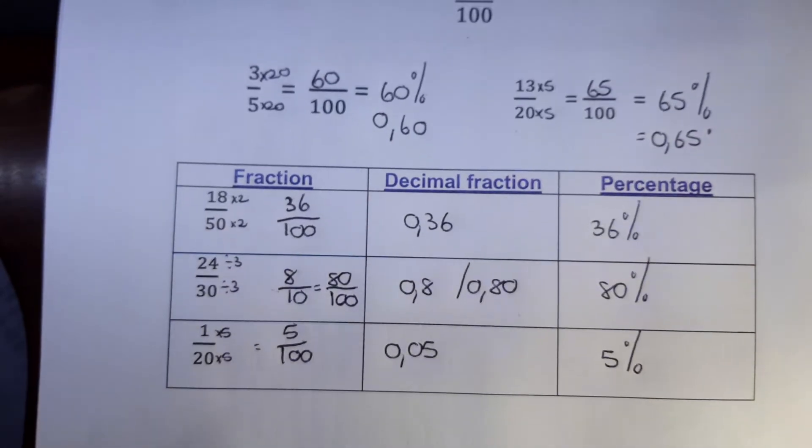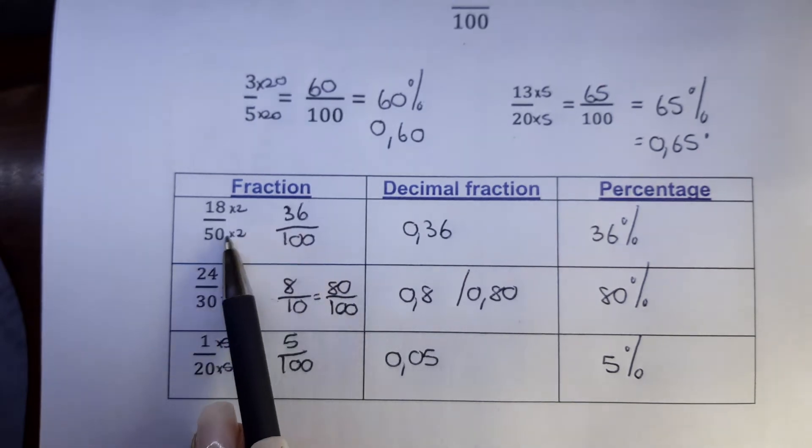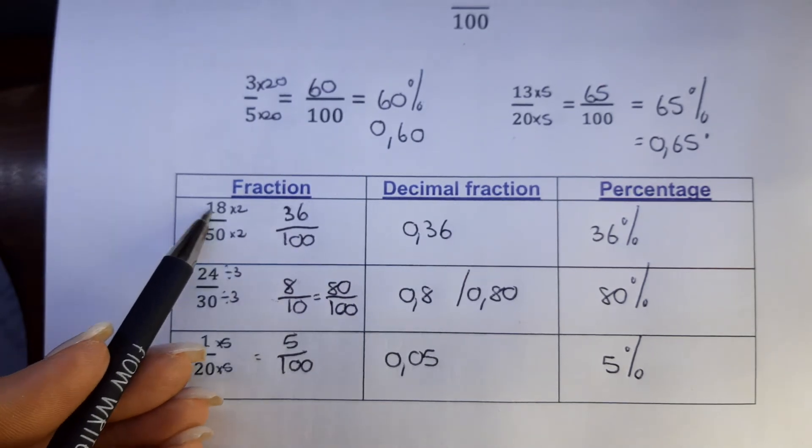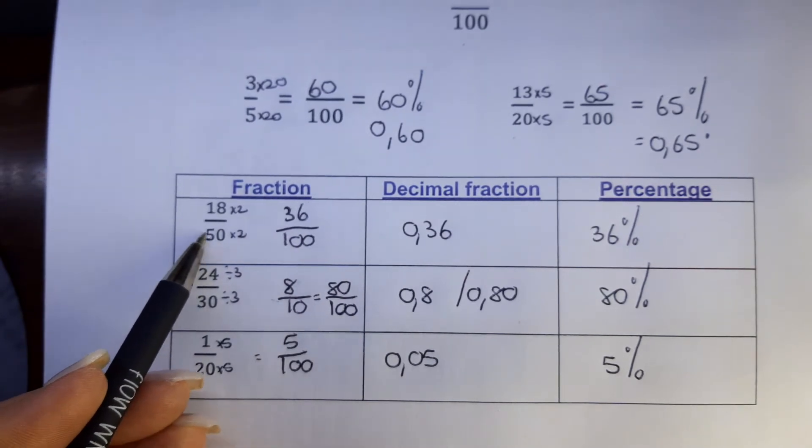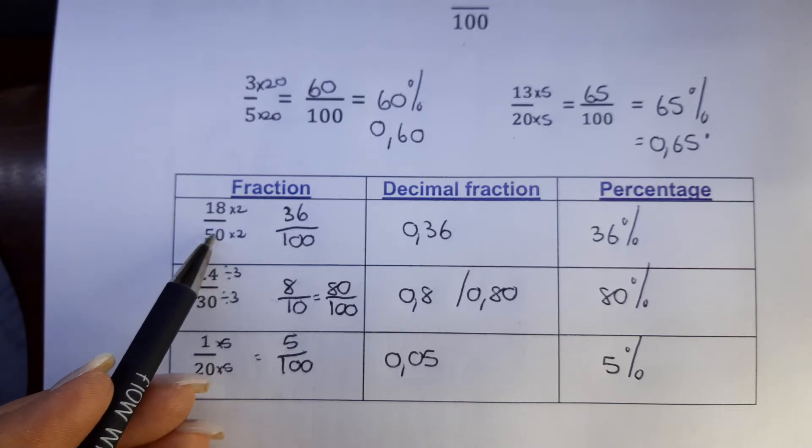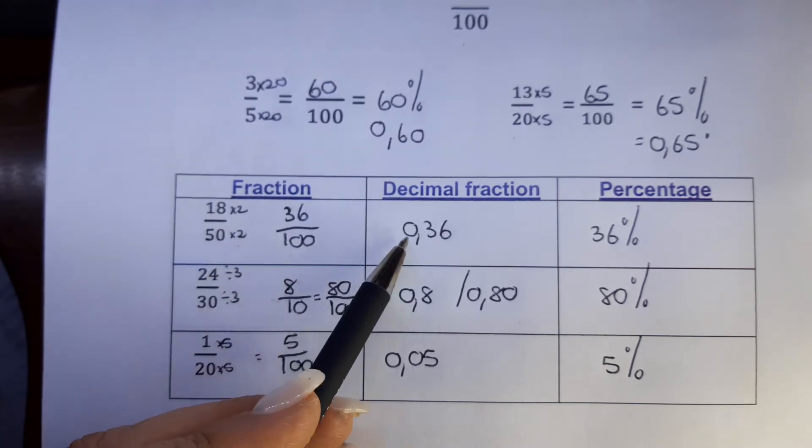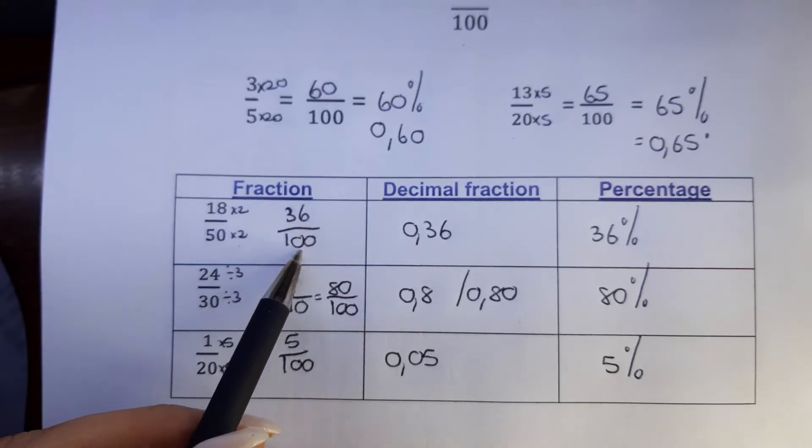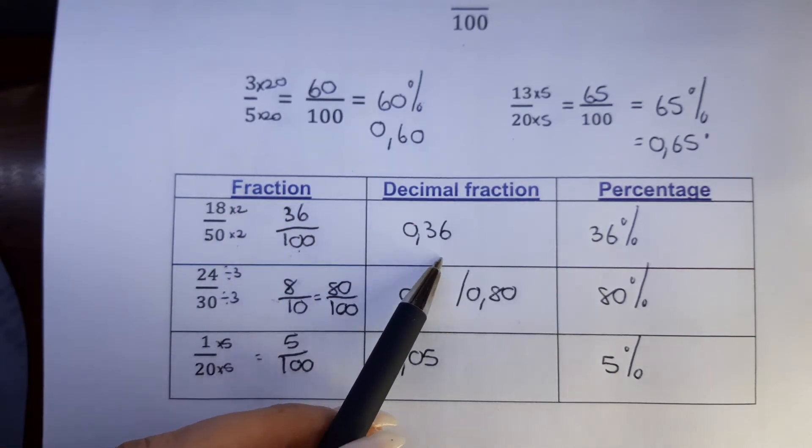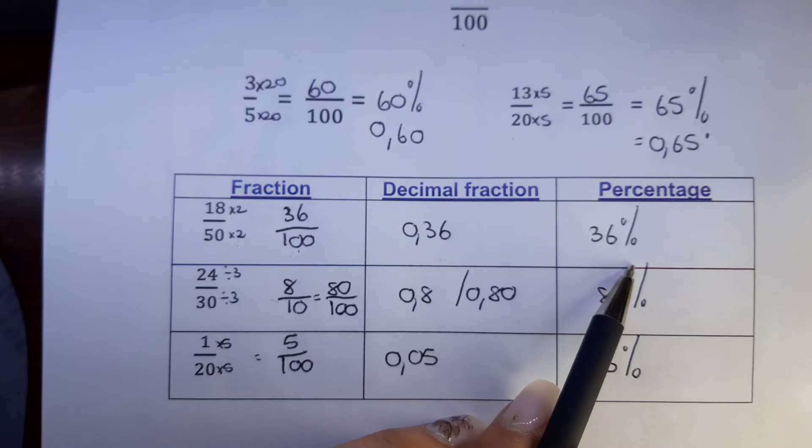In a column, they'll have to ask you in column notation, so 18 out of 50. What must I do with 50 to convert it to a hundred? Times by 2. That gives me 36 out of a hundred, 0.36, 36%.